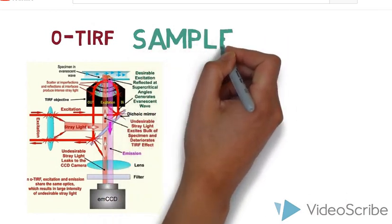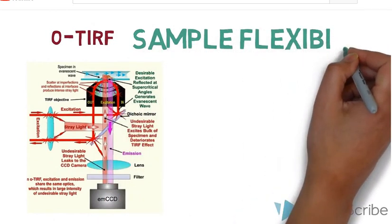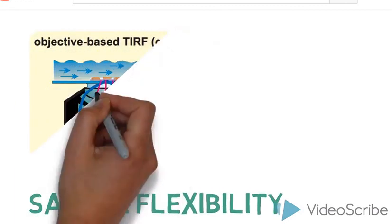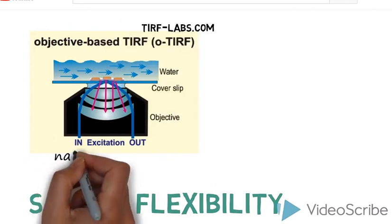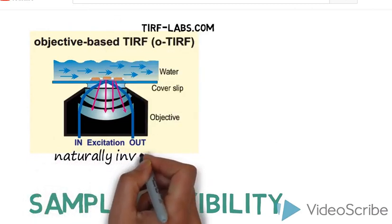When it comes to sample flexibility, O-TIRF has the advantage. The O-TIRF setup is naturally inverted, meaning that the objective can connect nicely with the bottom of the slide through oil immersion. This makes collecting near-field signals straightforward.